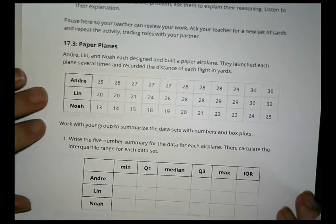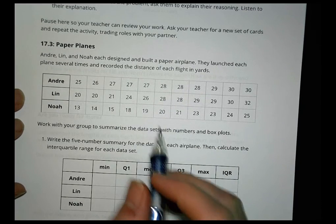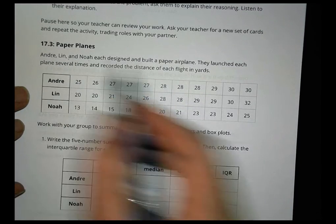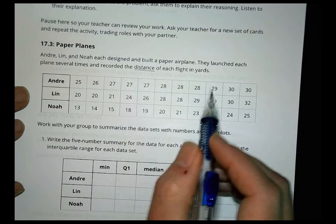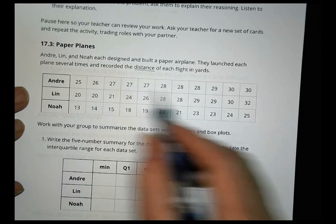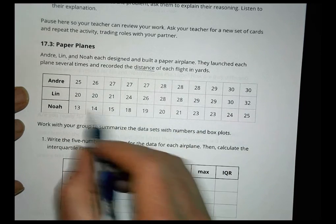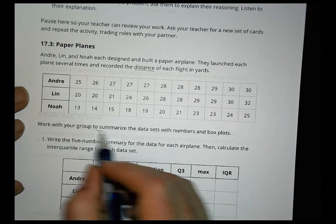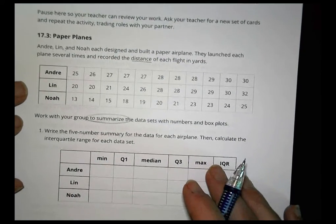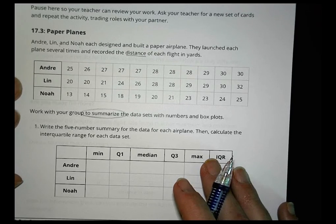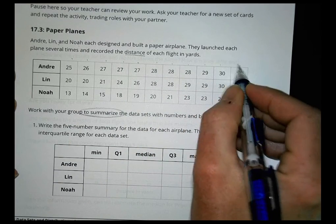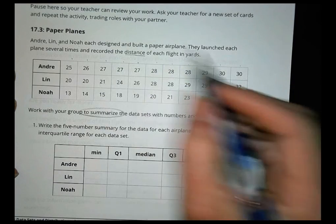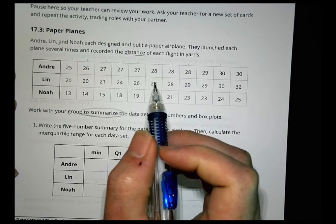Okay. Alright. I'm going to skip that part. And we'll go to activity number three called paper planes. We're going to use this data for several things here. It says Andre, Lynn, and Noah each designed and built paper airplanes. They launched each plane several times and recorded the distance that they flew. And nicely put the distances in order from 25 to 30, 20 to 32, 13 to 25. We're going to use this to summarize the data with numbers and then later into a box plot. Okay. So the nice part here is that we have 1, 2, 3, 4, 5, 6, 7, 8, 9, 10, 11 values.